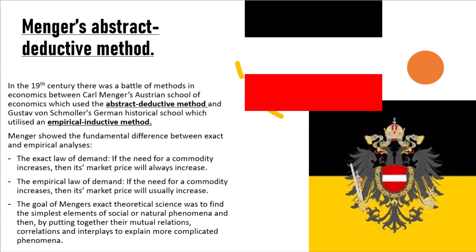Let's have a look at Menger's abstract deductive method. In the 19th century, there was a battle of methods in economics between Karl Menger's Austrian school of economics, which used the abstract deductive method, and Gustav von Schmoller's German historical school, which utilised an empirical inductive method. Menger showed the fundamental difference between exact and empirical analysis. The exact law of demand: if the need for a commodity increases, then its market price will always increase.